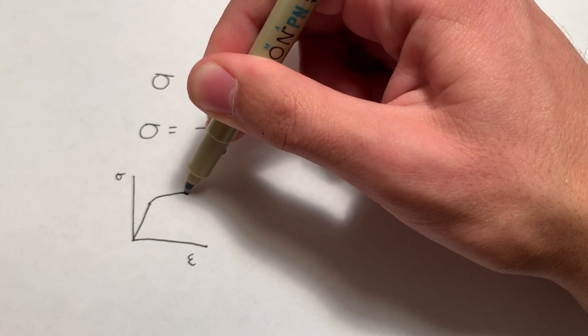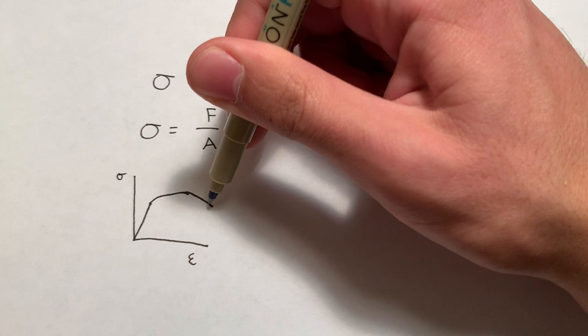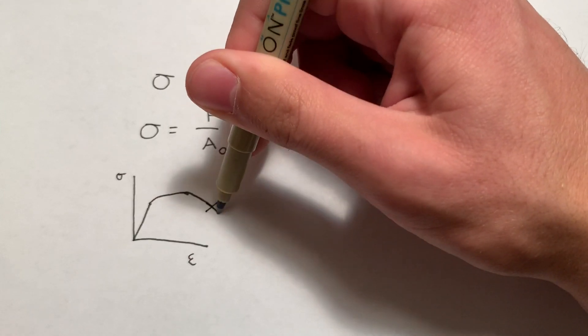And then it gets to some point, we call that the ultimate stress or the tensile stress. And then within this region, it starts necking. Deformation becomes no longer uniform. And then it breaks.